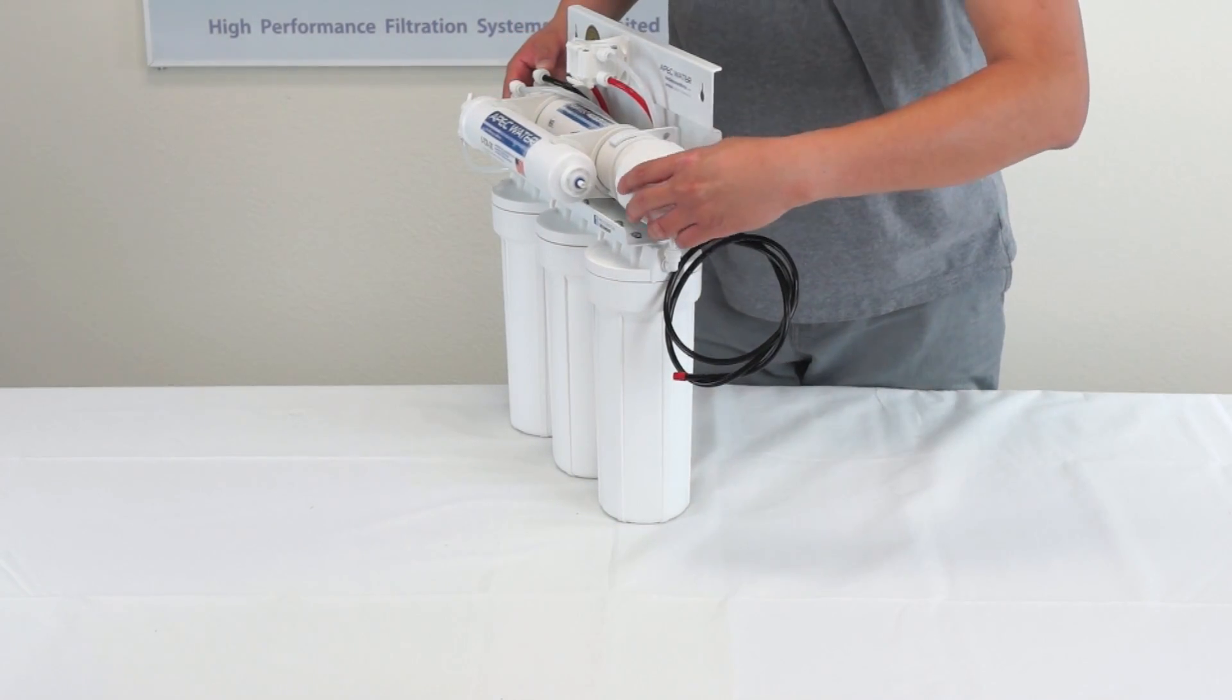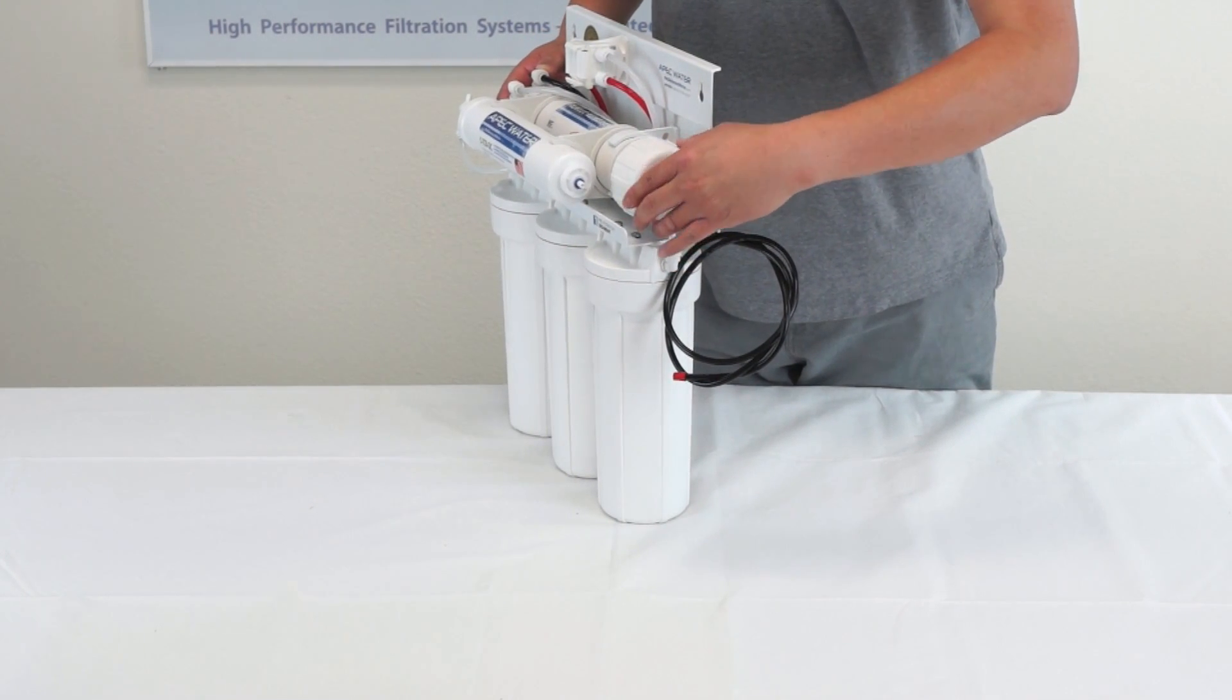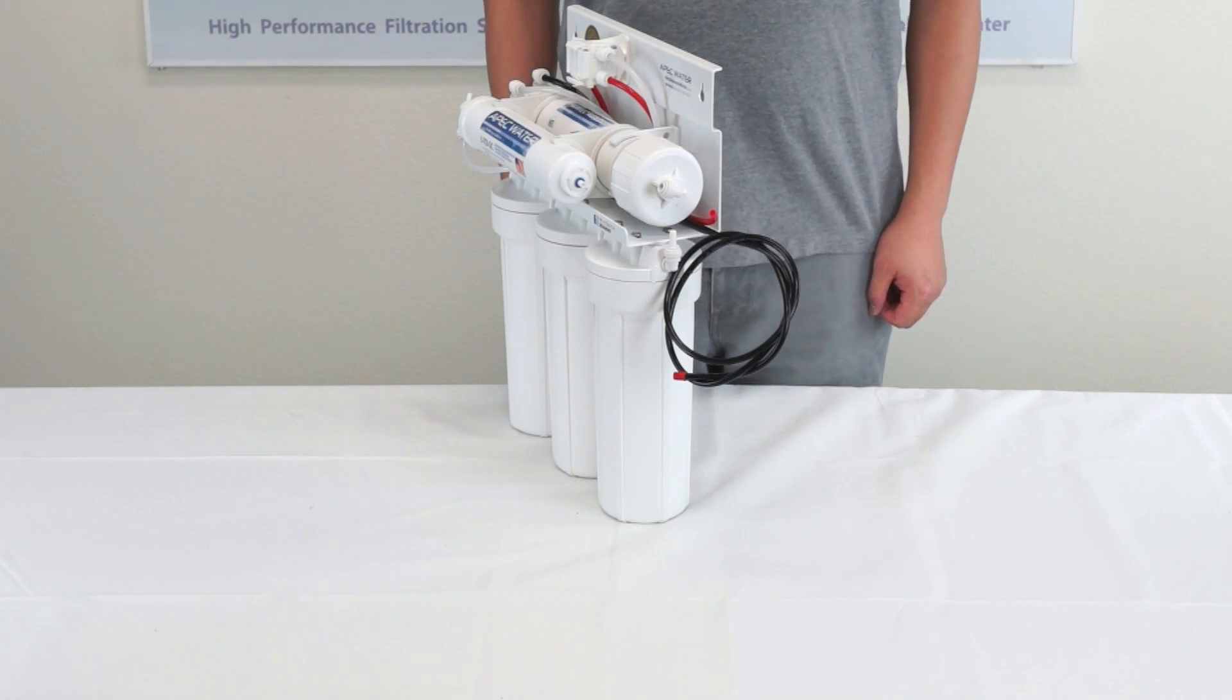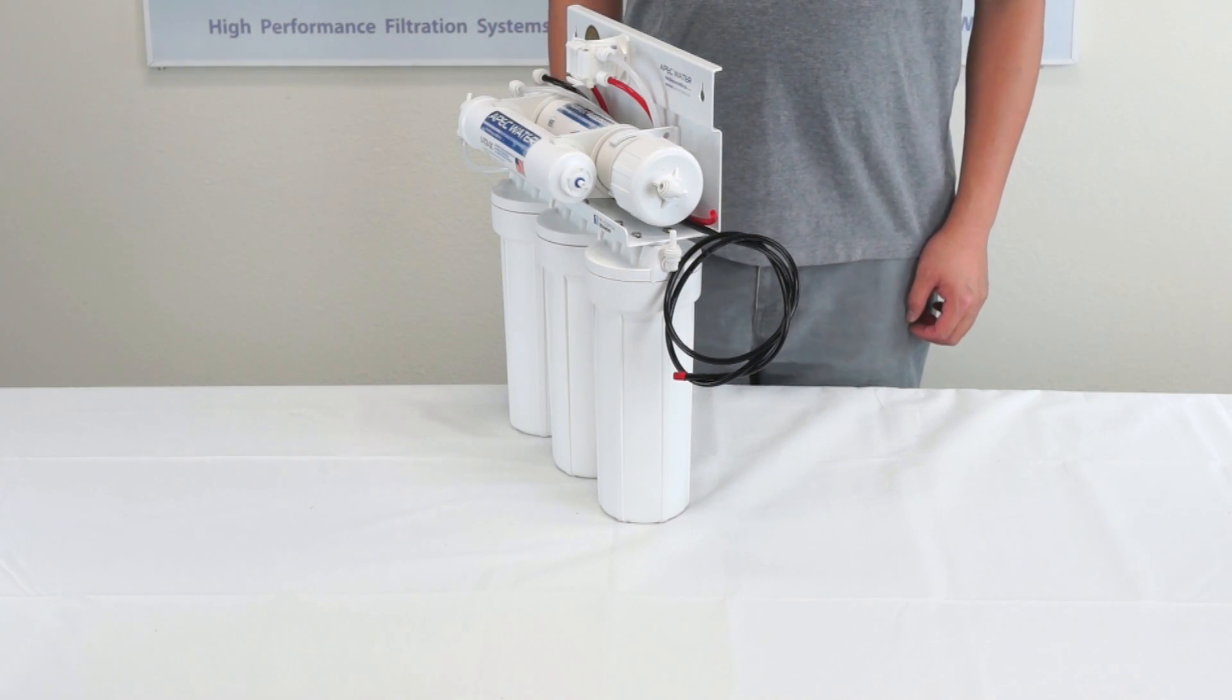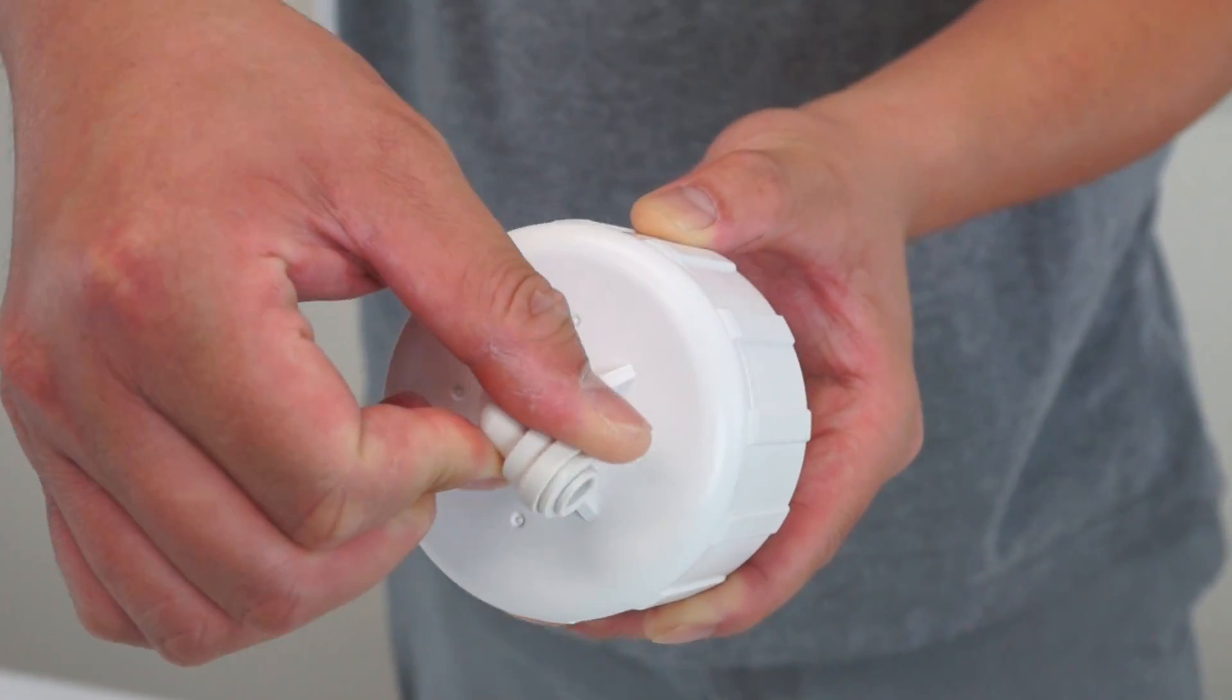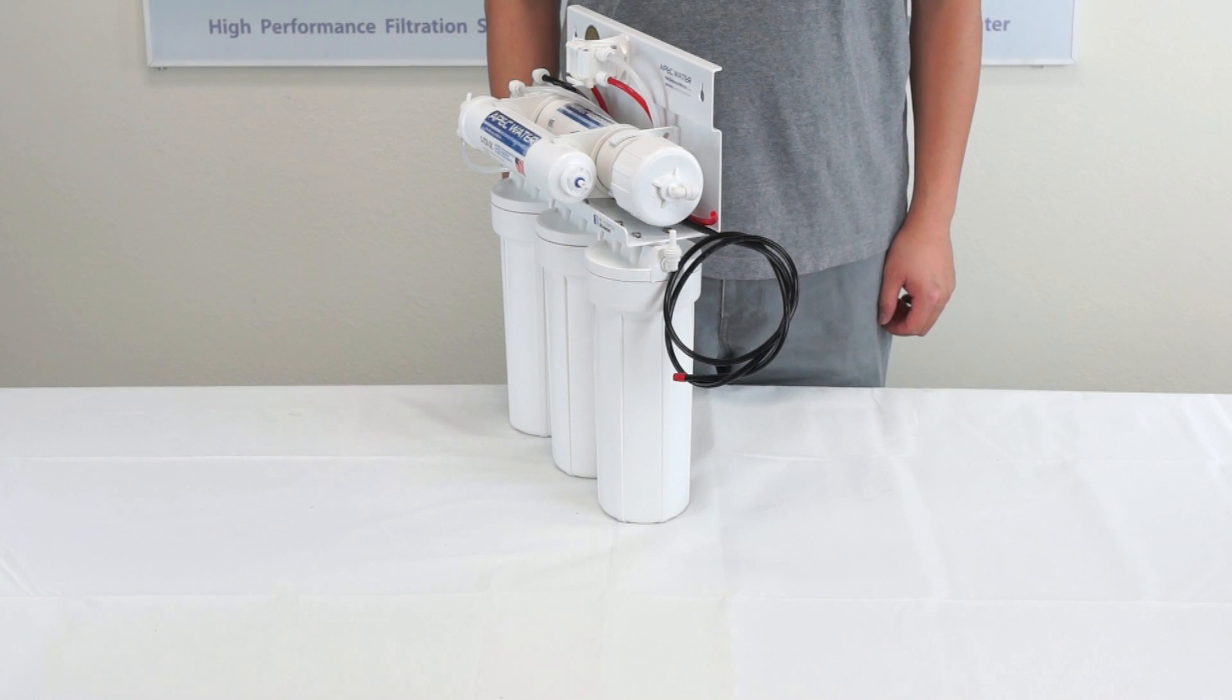Now close the cap, hand tightening it by turning clockwise. Please note the elbow must be tightened before the red tubing can be connected. To tighten the elbow, turn clockwise until it aligns with the red tubing. Do not turn the elbow backwards as this will loosen the Teflon fitting.